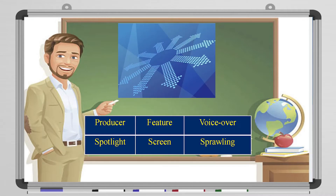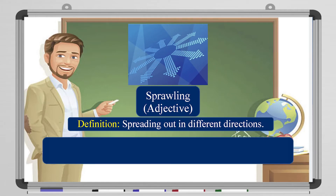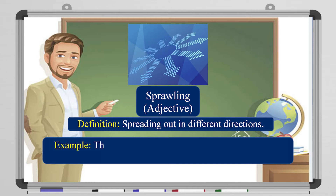Let's look at this picture — this is the second to last. It's going in every direction. When something goes in every direction, it is 'sprawling.' Sprawling is an adjective meaning spreading out in different directions. The example: the sprawling houses are covering a large area of the land — they are sprawling everywhere.